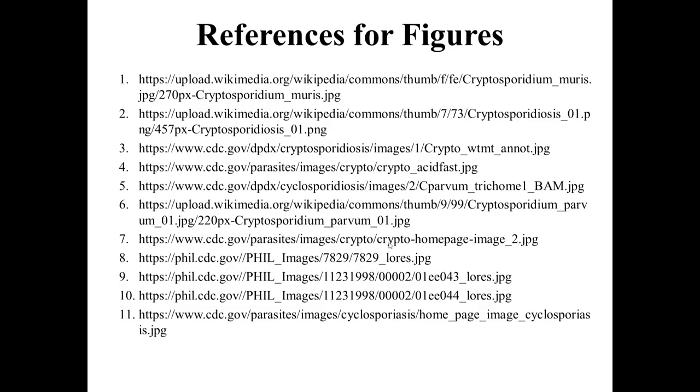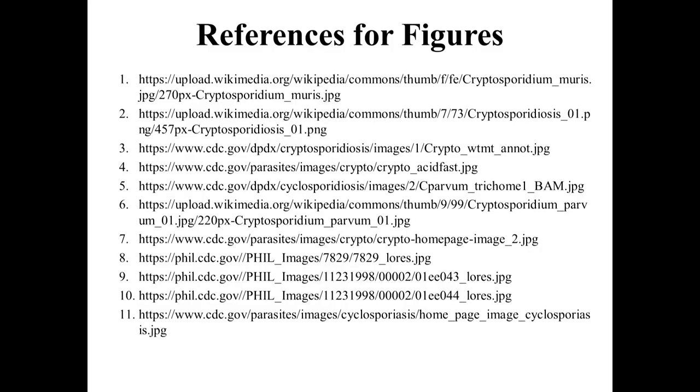In summary, all the different intestinal coccidia we have covered — Cryptosporidium, Cyclospora, Isospora, Microsporidia, and Sarcocystis — usually cause more severe infection in immunocompromised patients than in healthy people. In healthy people, infection might be asymptomatic and go unnoticed, but in immunocompromised patients they cause very severe symptomatology that can be fatal due to dehydration resulting from profuse watery diarrhea. Thank you.